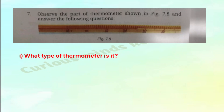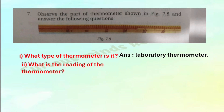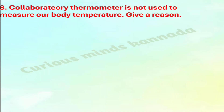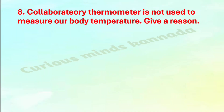Seventh question: Observe the part of the thermometer shown in figure 7.8 and answer the following. First: What type of thermometer is it? Answer: laboratory thermometer. Second: What is the reading of the thermometer? Answer: 26 degree Celsius. Third: What is the smallest value this thermometer can measure? Answer: 1 degree Celsius.